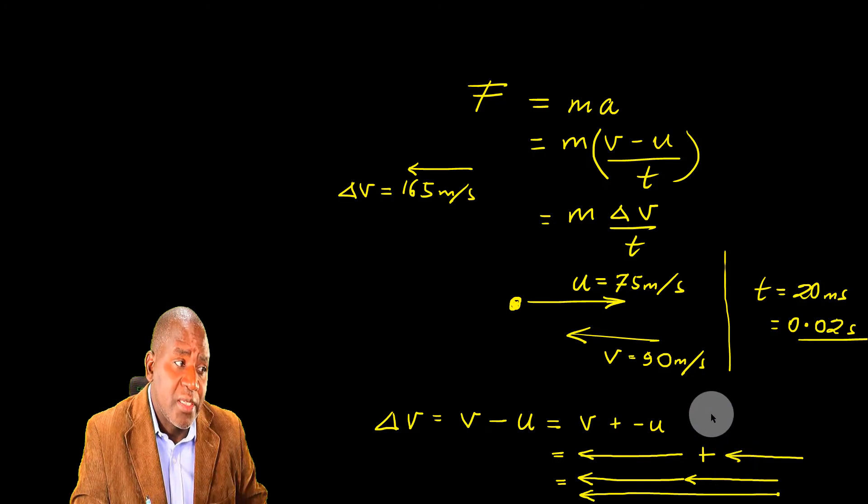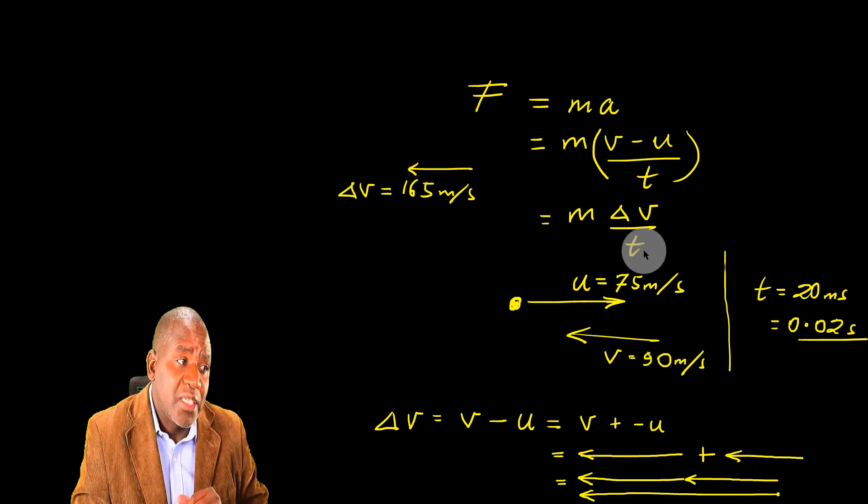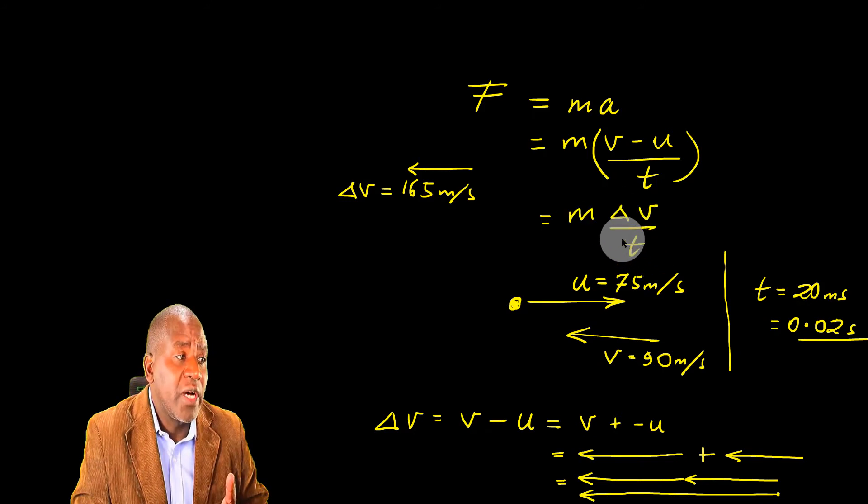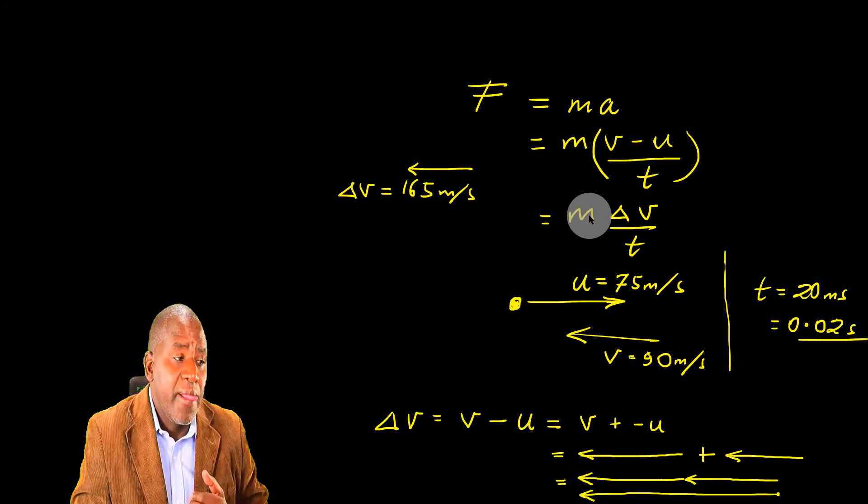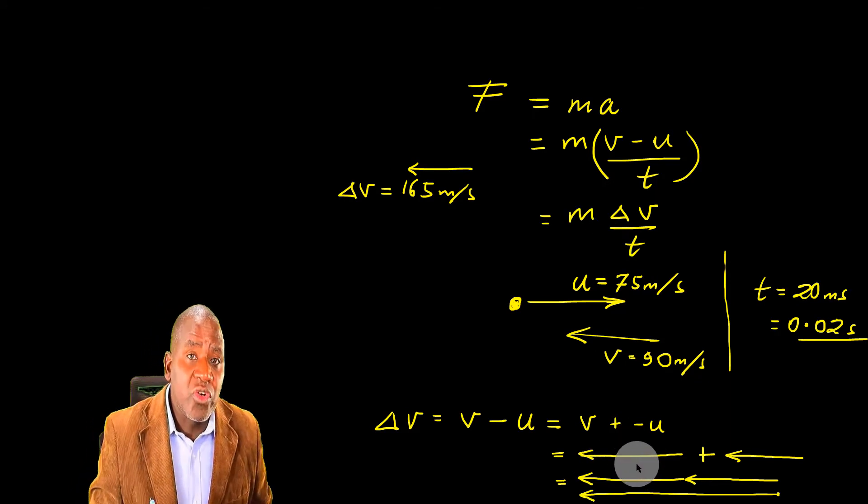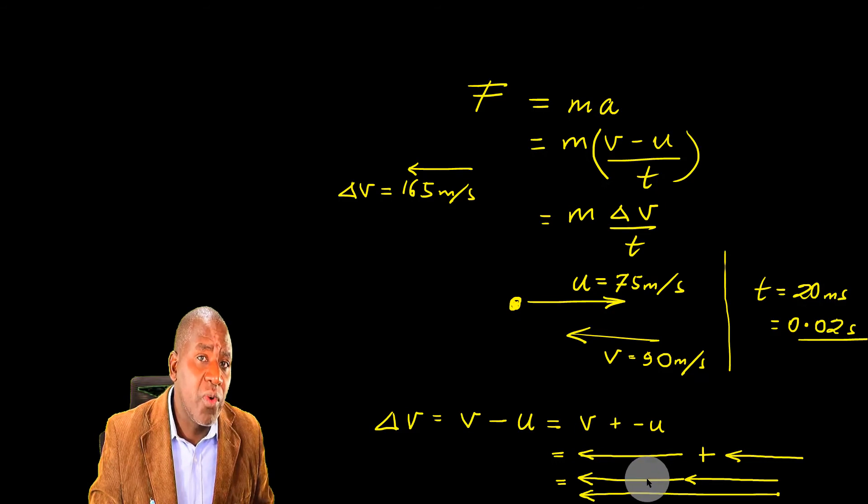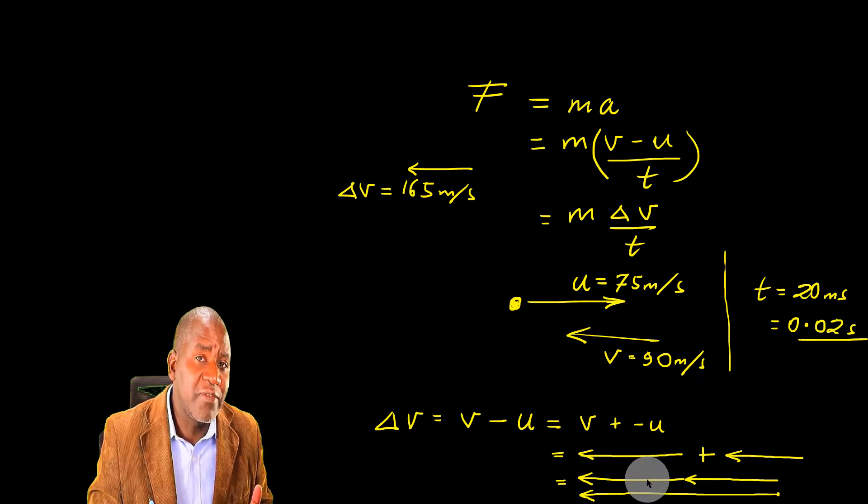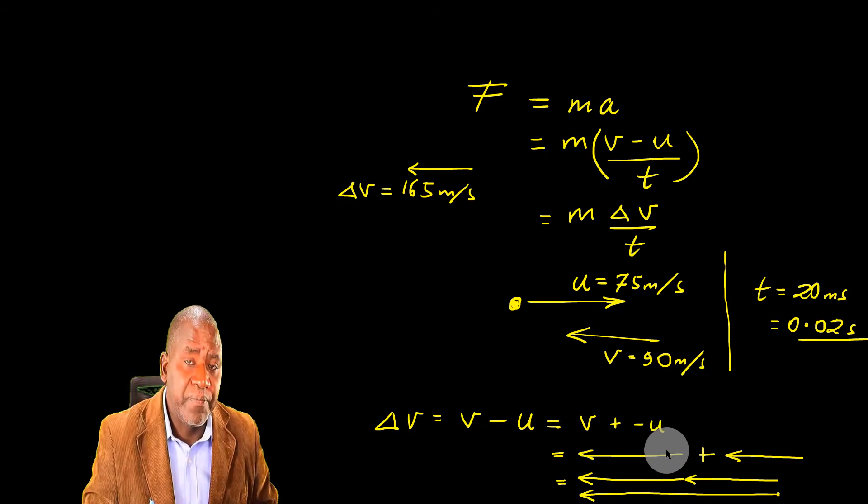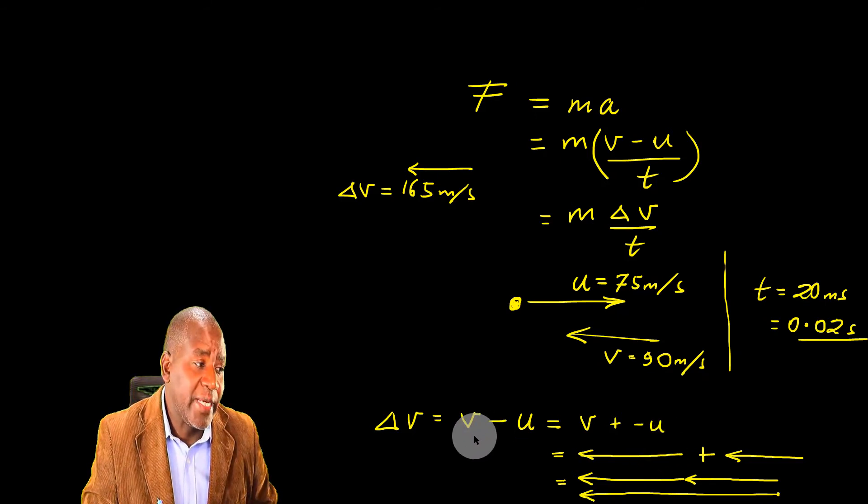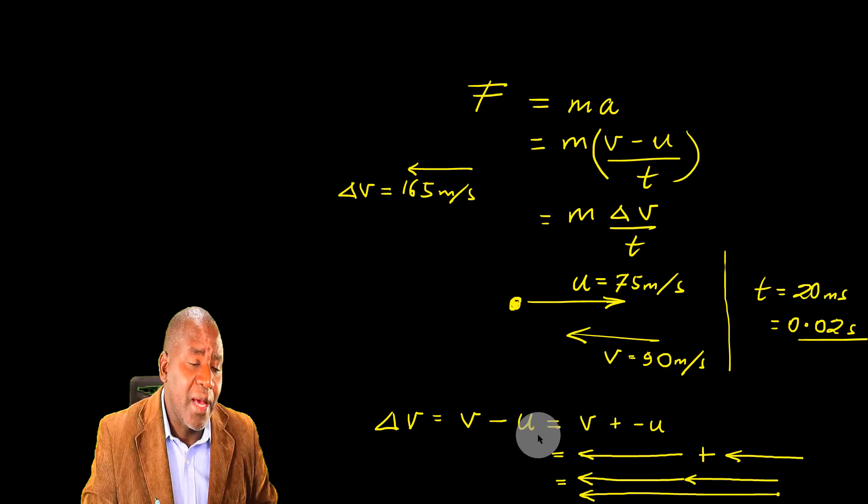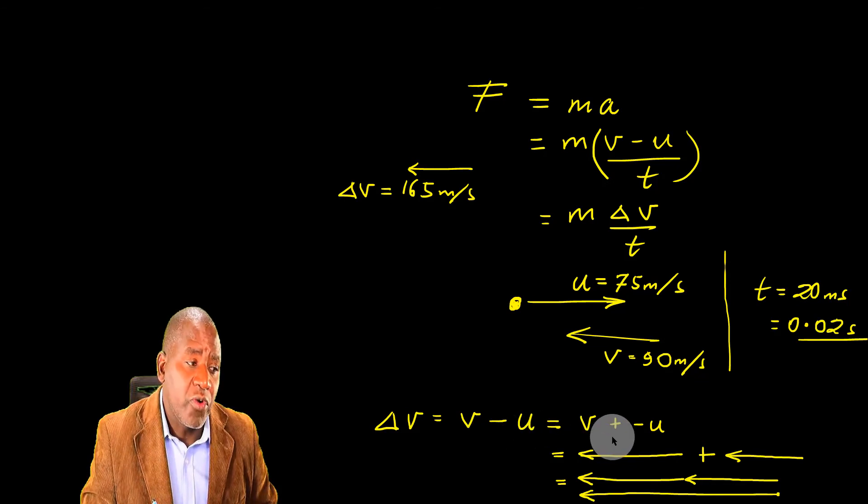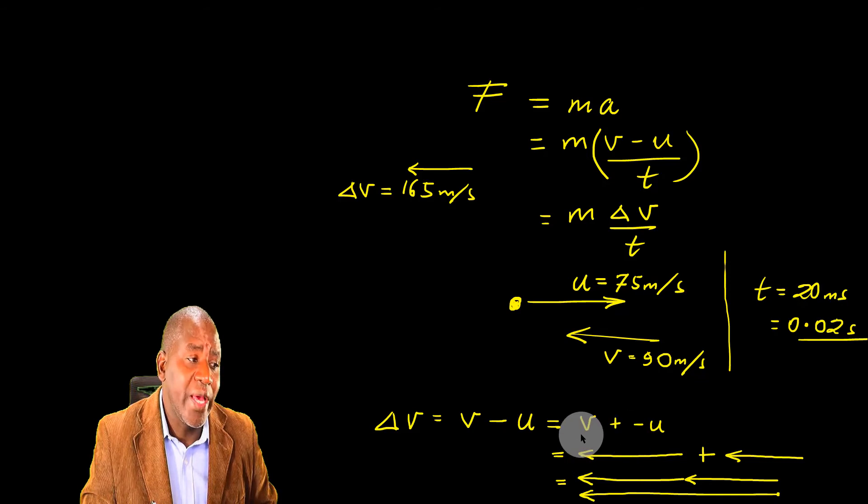Let me dwell a little bit here, because the moment you get this correct, the rest of the problem is solved. Why do I say that? The moment you get delta V, you find that T and M are given. We just need to plug in those values into that equation. But, have we gotten the concept? Have we understood the concept? Why we could not be able to solve it in the first place? It lies here.